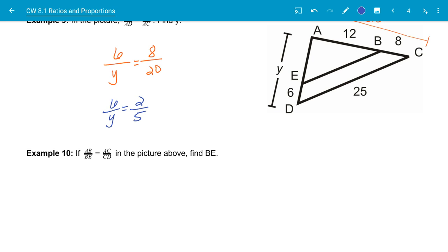This makes it easier to cross multiply. So 2 times Y is 2Y, and 6 times 5 is 30. Dividing both sides by 2, Y is equal to 15.